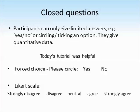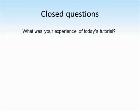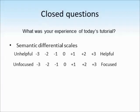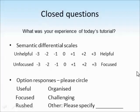Participants could also be asked to circle a response on a Likert scale — a range from strongly disagree through to strongly agree. Here they're only being asked to circle one response, so it's still a closed question, although they have a slightly wider range of responses. Another way is to use a semantic differential scale, such as 'what was your experience of the tutorial?', with differences between helpful and unhelpful, or unfocused and focused — participants circle whichever position along the scale they agree with. Or we can give option responses and ask them to circle one, such as useful, focused, or rushed. If they don't agree with any, we can leave an 'other' option for them to specify their answer.